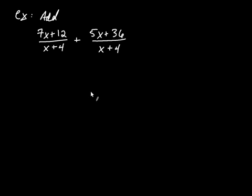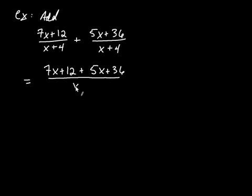Let's add together these two rational expressions. Now, remember, rational expressions are like fractions. And the most important thing to remember about adding or subtracting fractions is that they have a common denominator, like denominators. They do, so we simply add the numerators together. So it's going to be 7x plus 12 added to the numerator 5x plus 36, and then all over the common denominator, which is x plus 4.